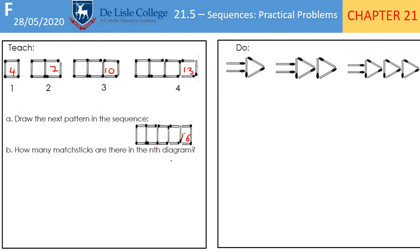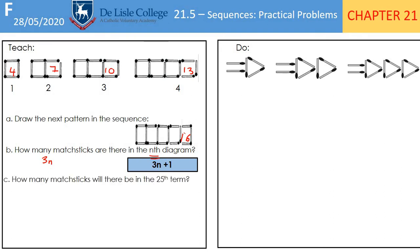How many matchsticks are there in the nth diagram? That means what is the nth term rule? Our sequence is 4, 7, 10, 13 — we're adding 3 each time, so we start with 3n. If n equals 1, 3 times 1 is 3, but we want 4, so we add 1: the nth term rule is 3n + 1. How many matchsticks in the 25th term? We substitute 25 in: 3 times 25 plus 1 equals 76 matchsticks.